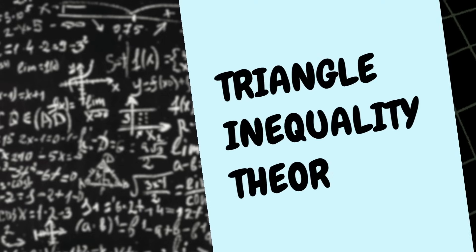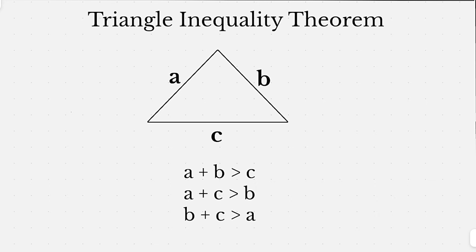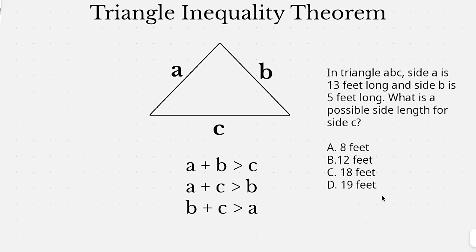While not quite as common, you are sometimes also tested on the triangle inequality theorem. And this looks a little bit more complicated than it is. Basically it's saying the sum of any two sides is greater than the third side. So A and B is going to be greater combined than C would be by itself, A and C together would be greater than B, so on and so forth. That's it. An example question might be, in triangle ABC, side A is 13 feet long, and side B is 5 feet long. What is a possible side length for side C?